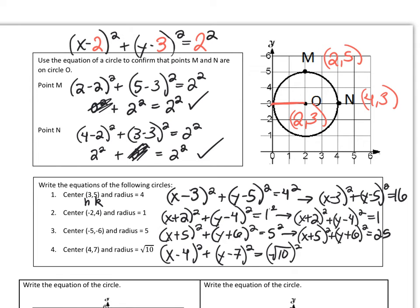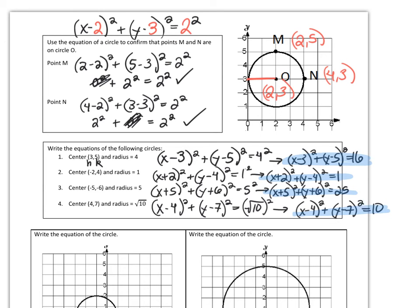This one's pretty straightforward. We subtract 4 and we subtract 7. Then we just have to think, what happens when we square the square root of 10? Well, we get 10. So these are the equations of the circles given the center and the radius. Not so hard.